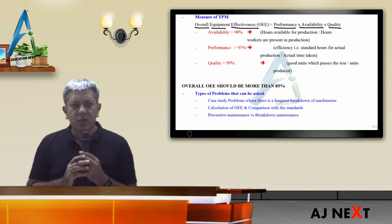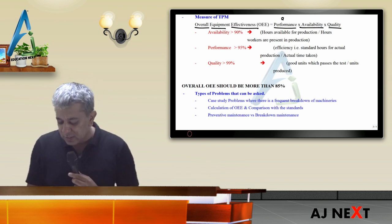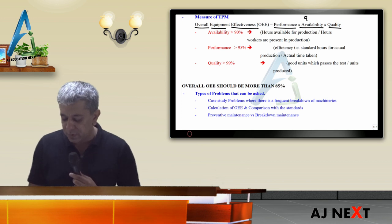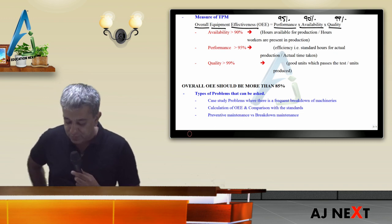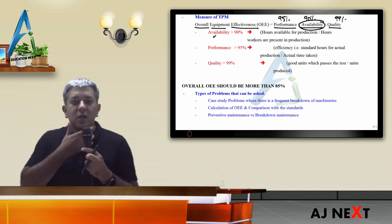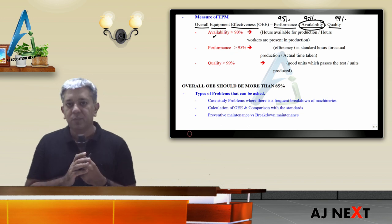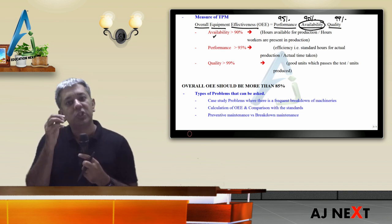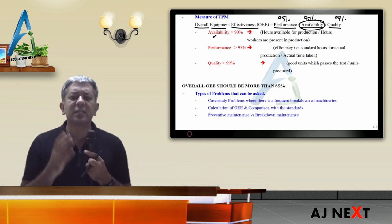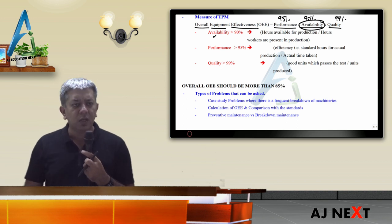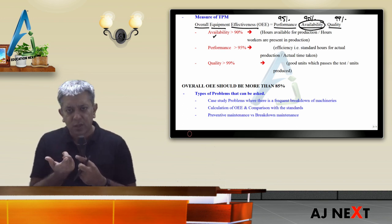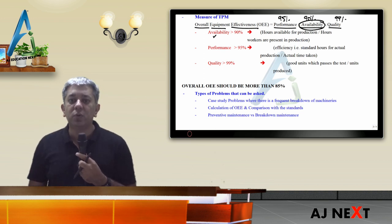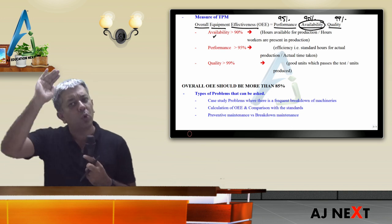Nakajima gave certain benchmarks, saying that if your TPM program is working fine, availability ratio should be above 90%, performance ratio should be above 95%, and quality ratio should be above 99%. Now let's look at these three ratios. First, availability — how many hours machines were available to the workers. Suppose workers come for 10 hours but 2 hours machines are not available due to overheating, so availability is 8 out of 10 hours, i.e., 80%.